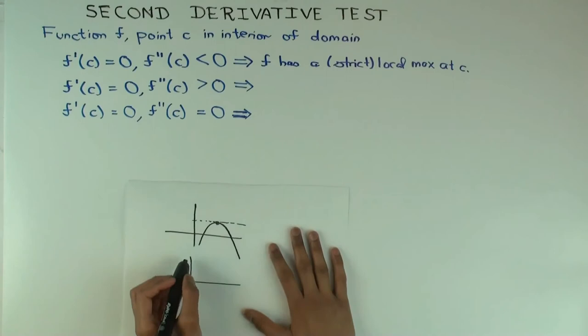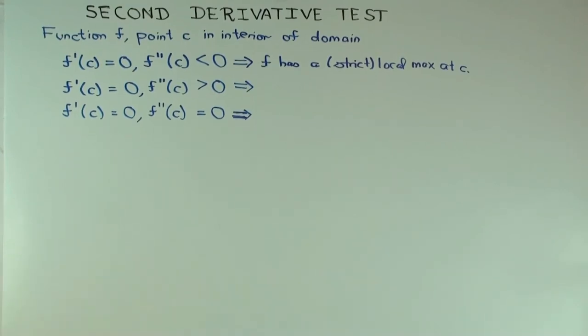What is the typical situation for f double prime c greater than 0? Concave up like that. And you expect to get a local minimum.